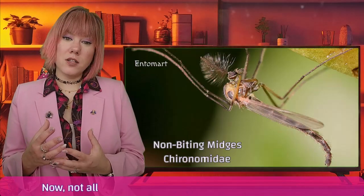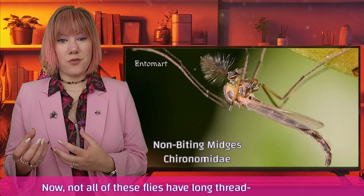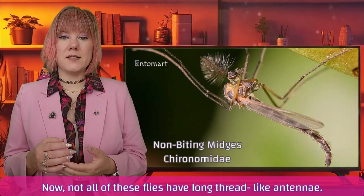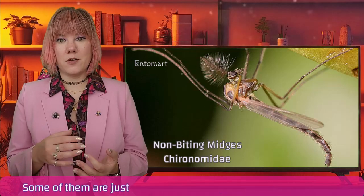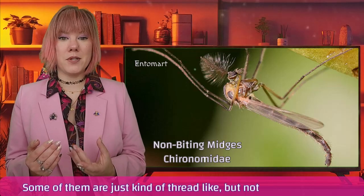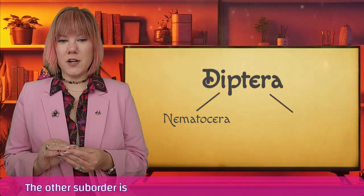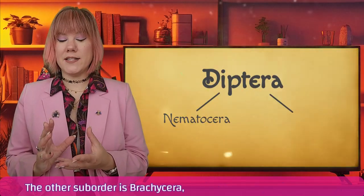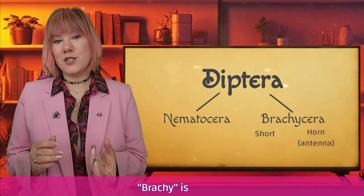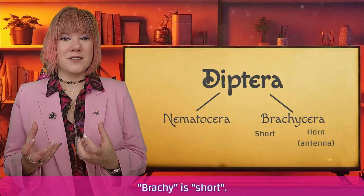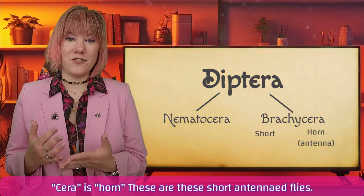It's a pretty big group. Not all of these flies have long thread-like antennae — some have feathery antennae, and some are just kind of thread-like but not particularly long. The other suborder is Brachycera, which means short horns. 'Brachy' is short, 'cera' is horn. These are the short-antennae flies.